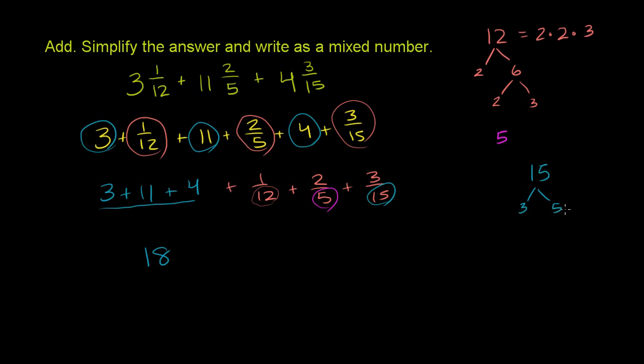We need something that has two 2's and a 3 from the 12. So our denominator has to have at least two 2's and a 3. Let's write that down: 2 times 2 times 3. Now it also has to have a 5, because it has to be a common multiple of 5.